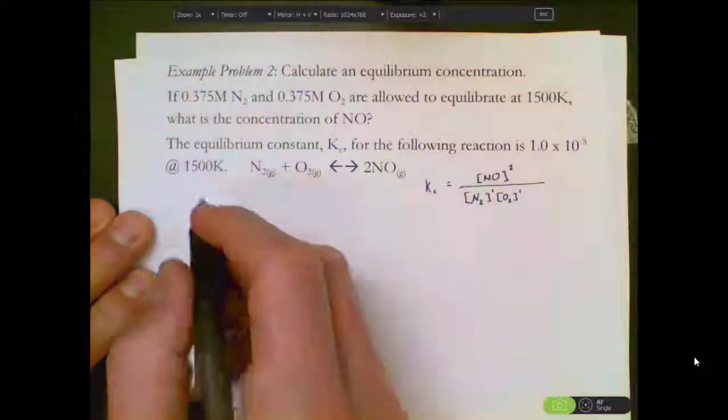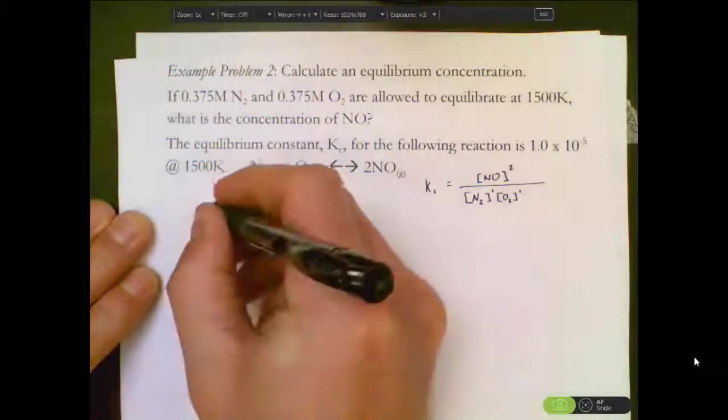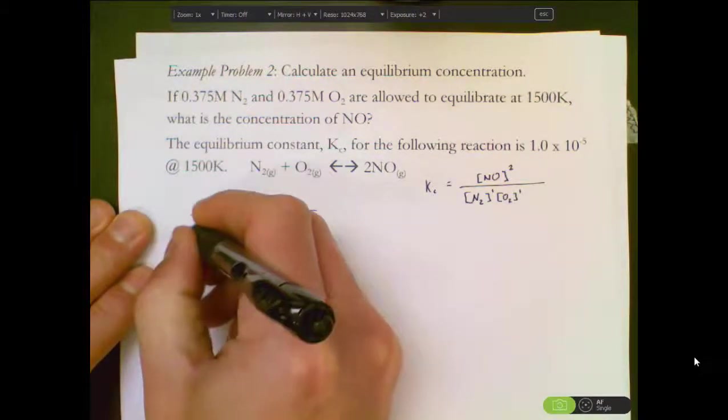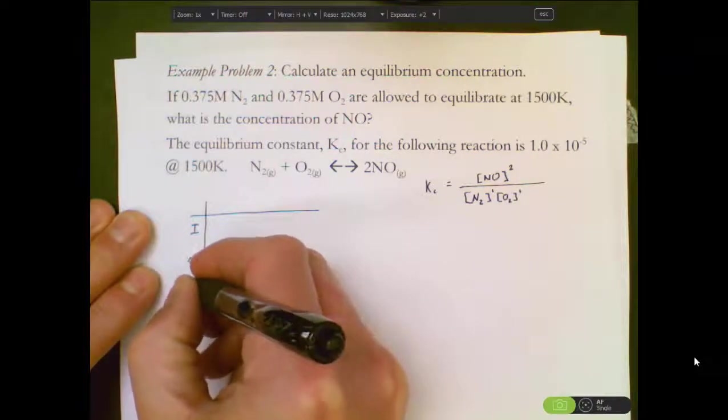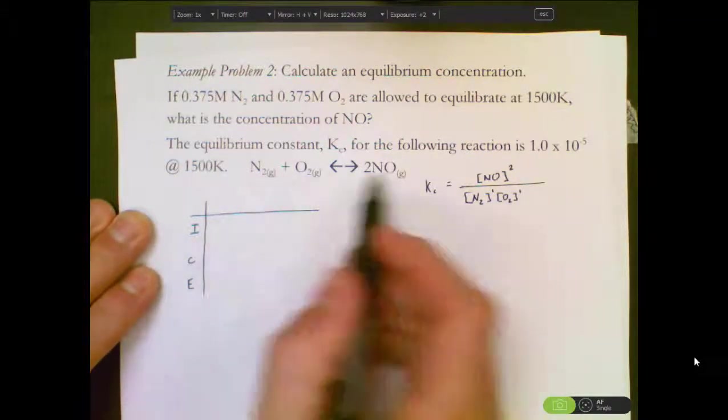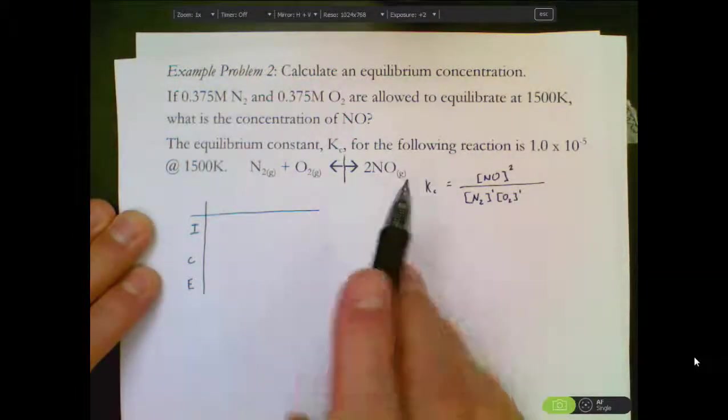Then since we don't know equilibrium values, we're going to need to create an ICE table. ICE goes along the left edge. And then our reactants and products are going to go on our ICE table. Recall that reactants are dealt with slightly differently than products.